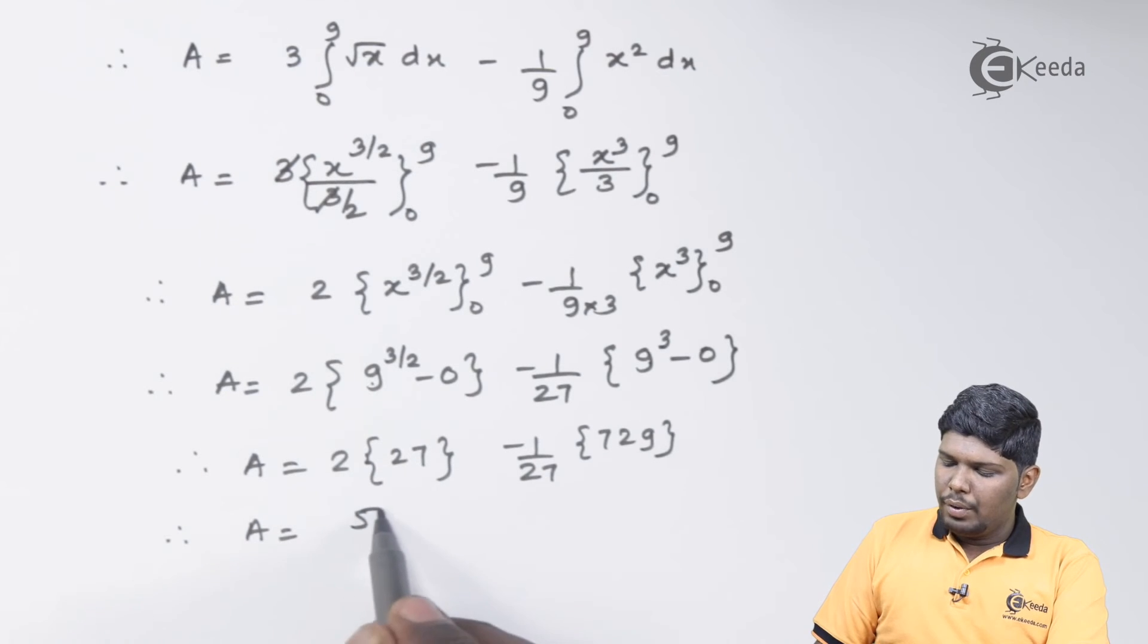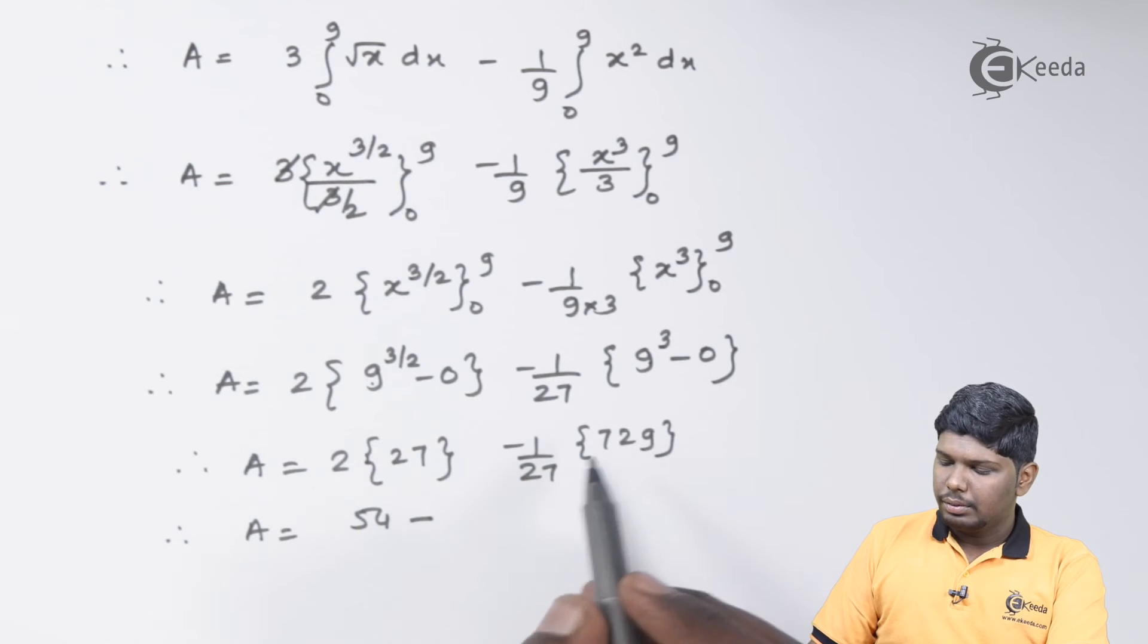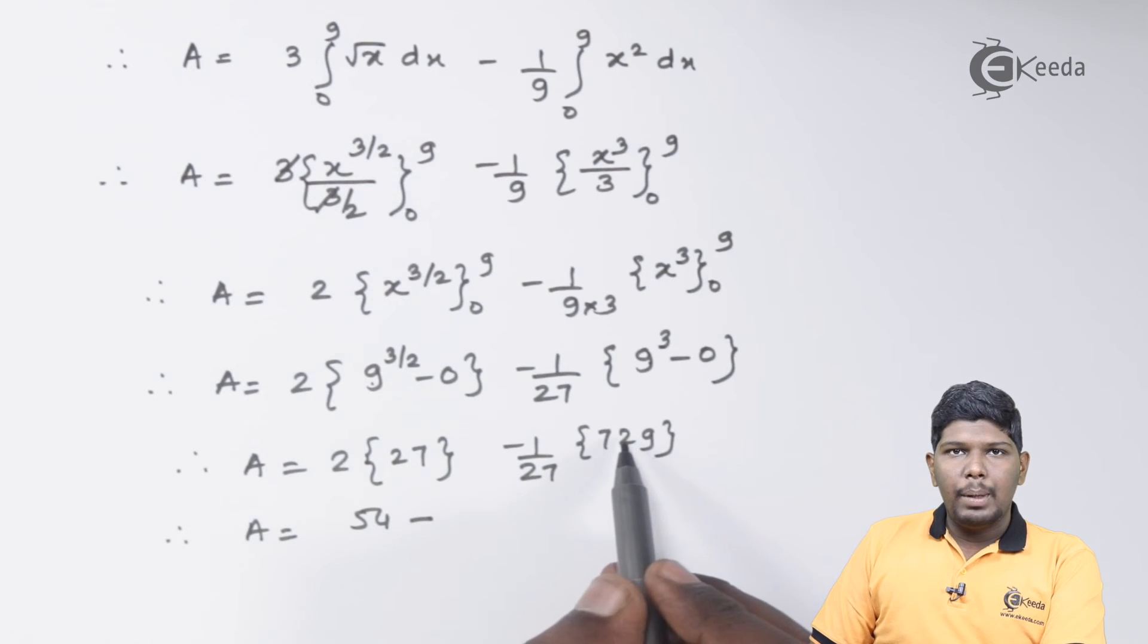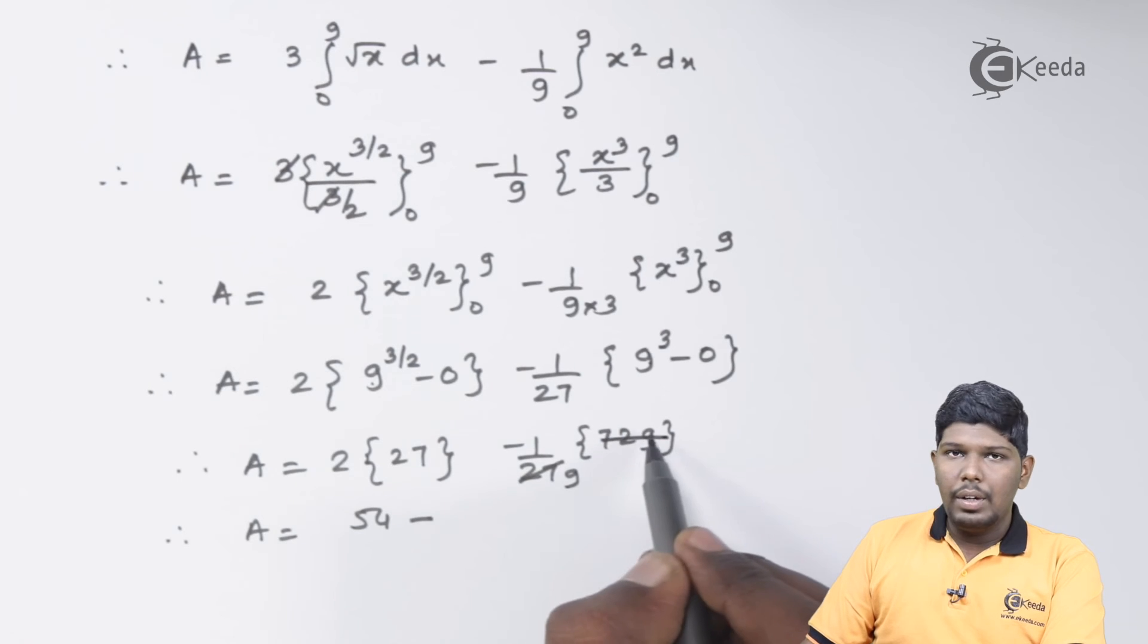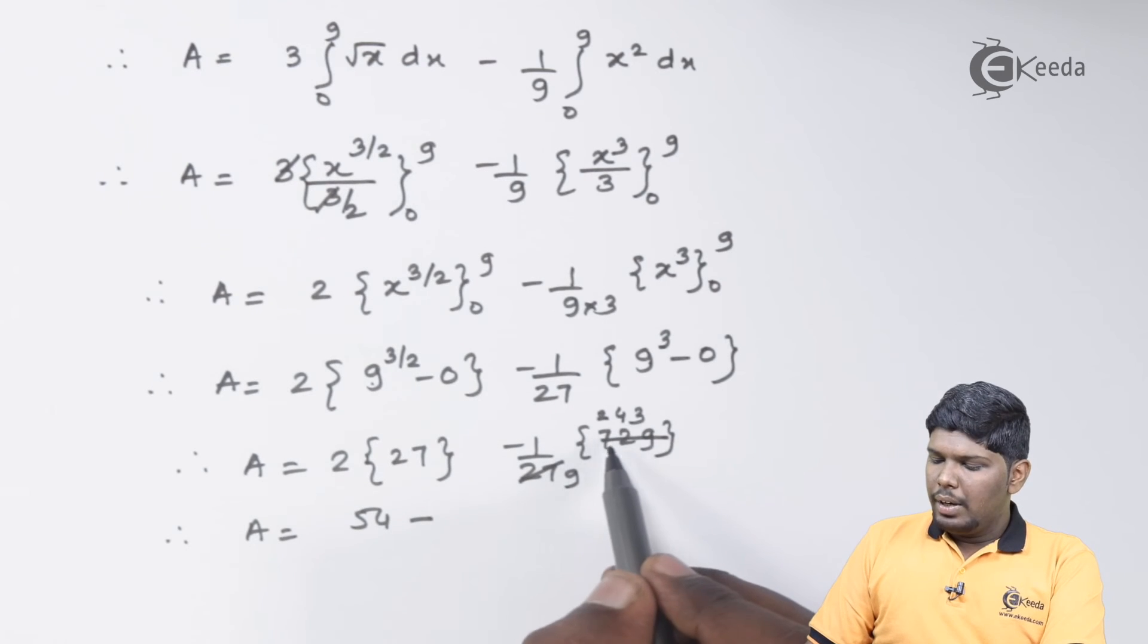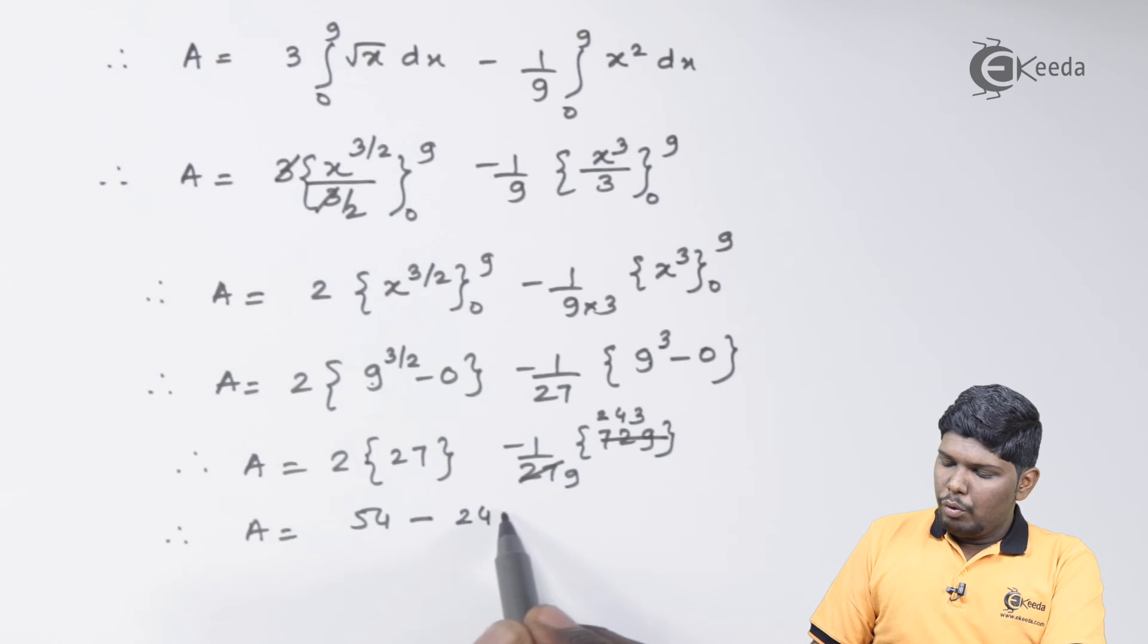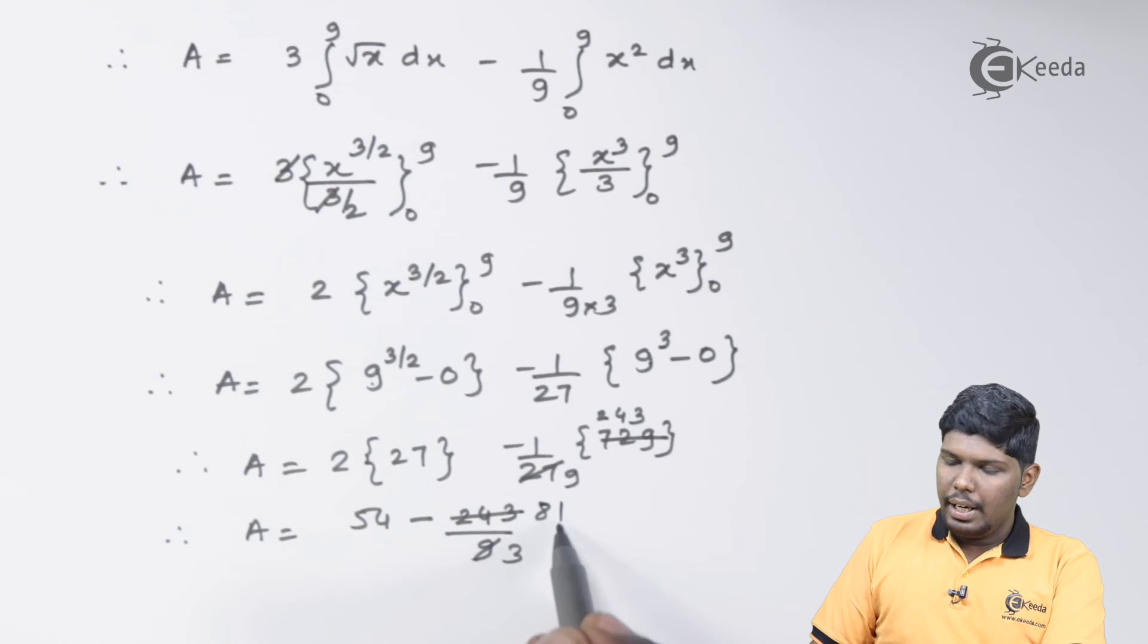27 into 2 will give you 54 minus, here we can simplify by the table of 3, that will give you 3 9s at 27 and here we have 243. So we have 243 upon 9. On further solving, this will give you 3 3s and 3 81s. That is 54 minus 81 upon 3.